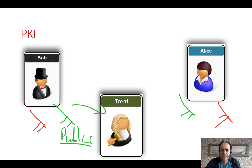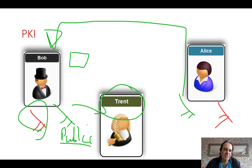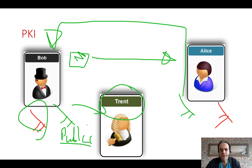If Bob wants to communicate with Alice, Alice will send her public key to Bob, and that's signed by Trent. As long as Bob trusts Trent, he knows that the key identifies Alice properly. He takes the message, hashes it, and encrypts that hash with his private key — that's signing. He then encrypts the message with Alice's public key, sends it over, and Alice decrypts it with her private key.